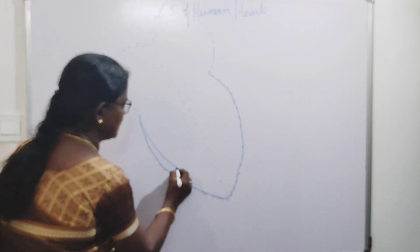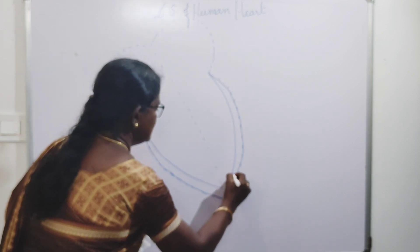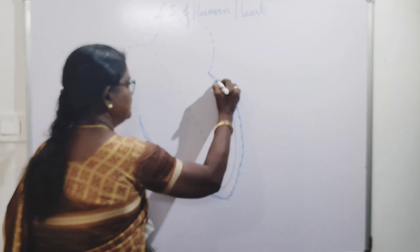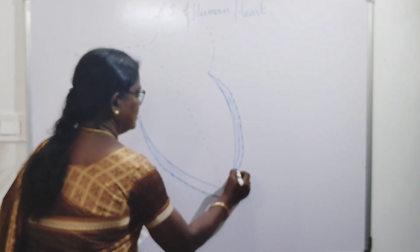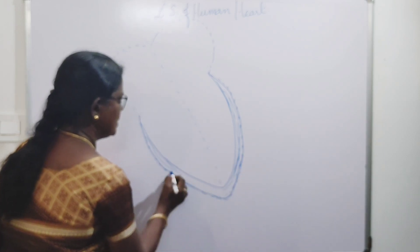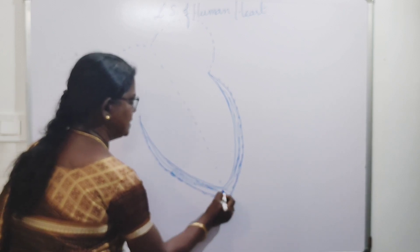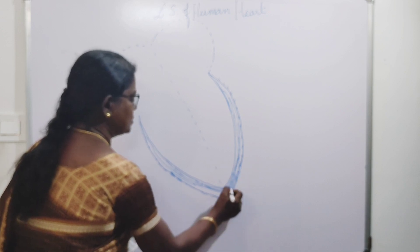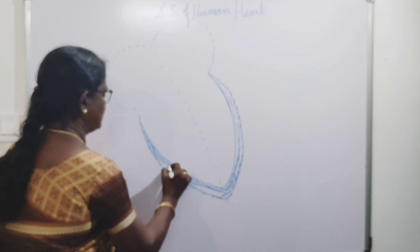We will make this a little bit thick, because this is cardiac muscle. In board exams, you cannot use any color — you can use only pencil and blue pen. Black pen is also not allowed. So use pencil only to draw the diagram.